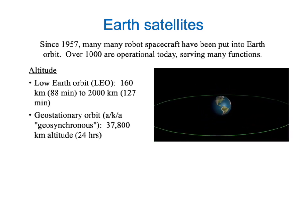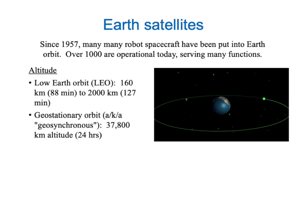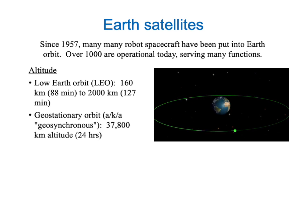A large enough orbit can be a geostationary orbit. That means that the satellite goes around once every 24 hours, and a satellite like that can stay above a fixed point on the Earth's equator as the Earth rotates. This is a very useful kind of orbit for a communication satellite.